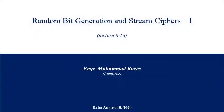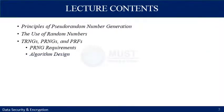Assalamu alaikum. This is lecture 16 of Data Security and Encryption. In this lecture we are going to discuss random bit generation and stream ciphers. The lecture contents include principles of pseudo-random number generation, the use of random numbers in cryptographic algorithms, and different methods to generate cryptographic random numbers: true random number generators, pseudo-random number generators, and PRF, which is a pseudo-random function.